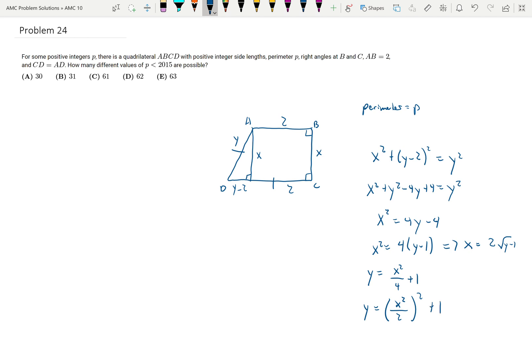So now let's look at, now that we have expressions for X and Y, I want to look at the perimeter. So the perimeter of the quadrilateral is going to be 2 plus X plus 2Y. And so I'm going to substitute in for X. So that's going to be 2 plus 2 root Y minus 1 plus 2Y. So we need to make sure this is less than 2015.